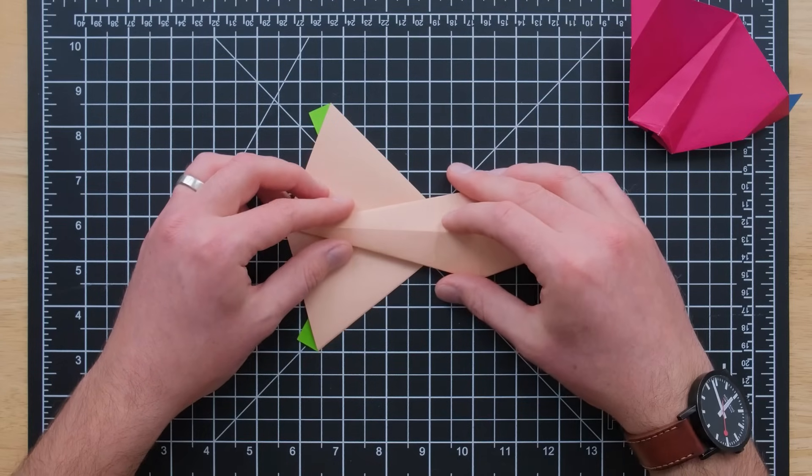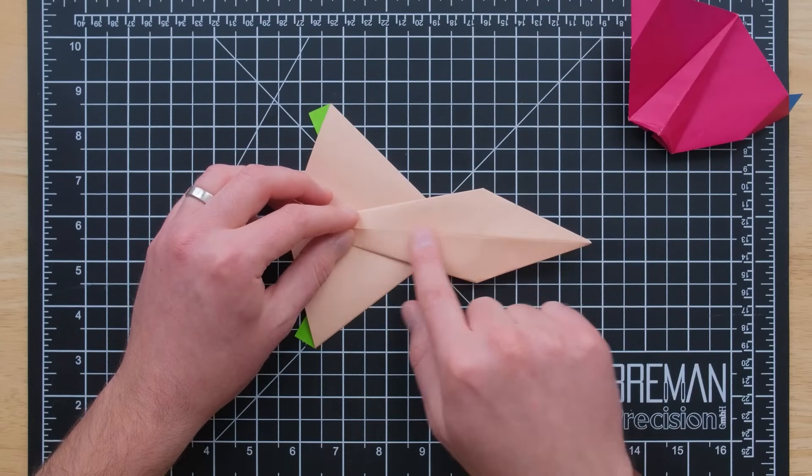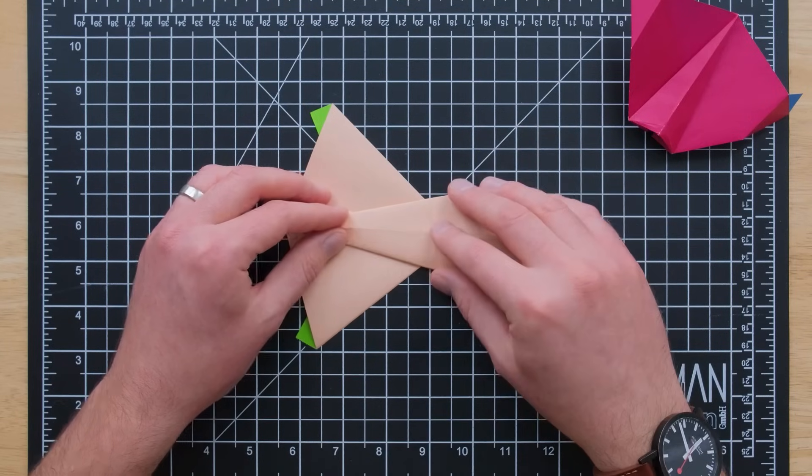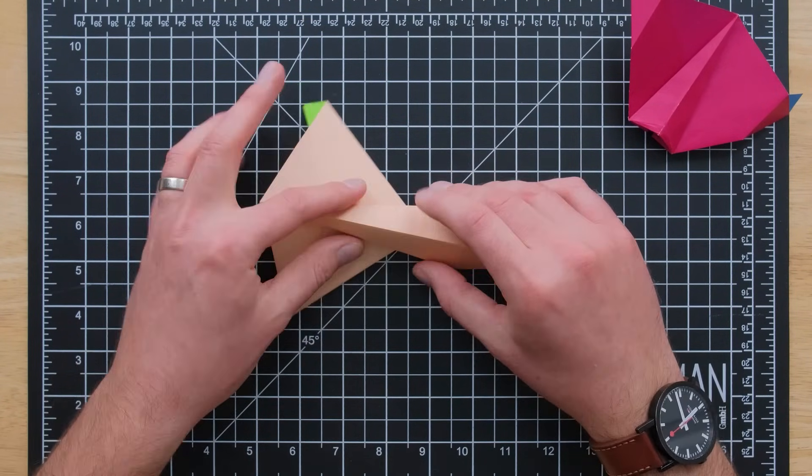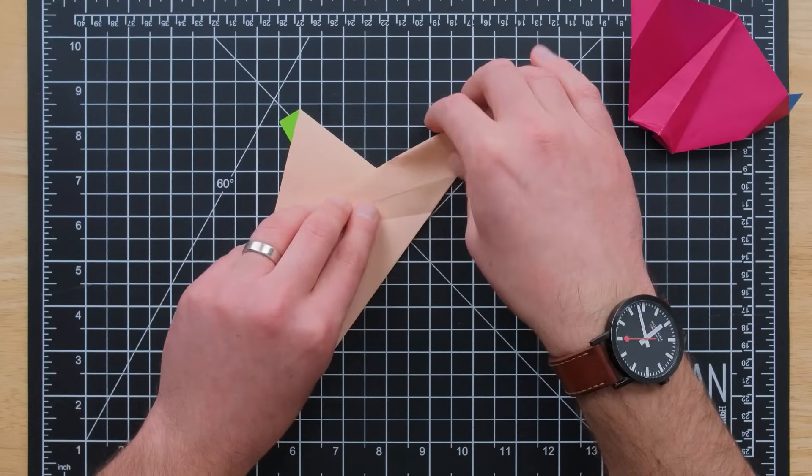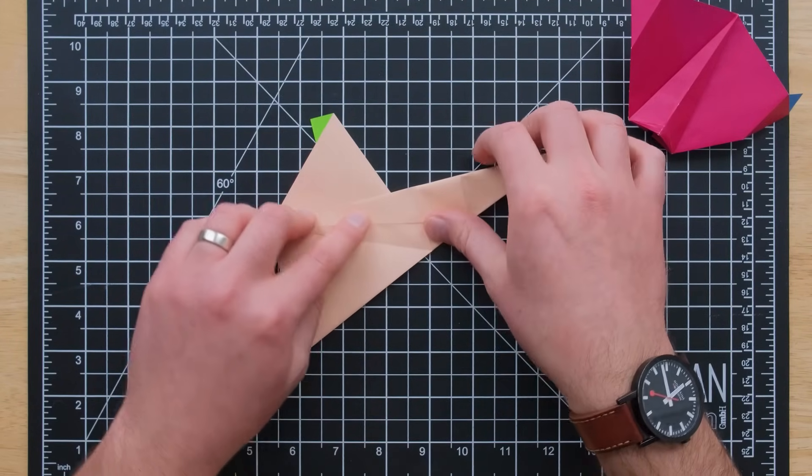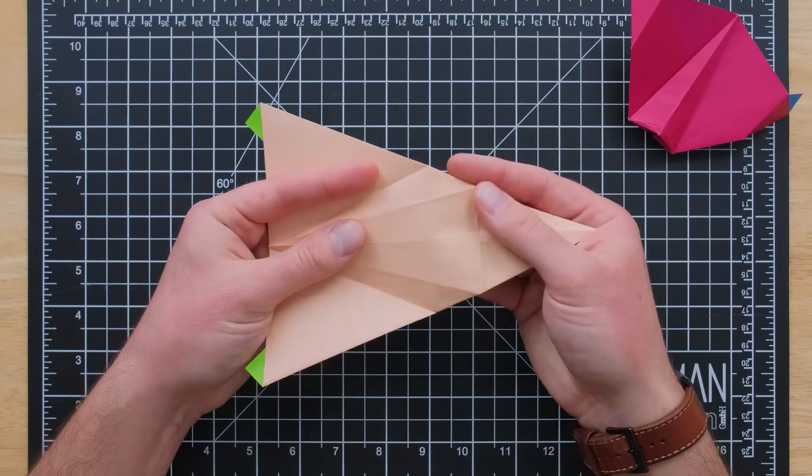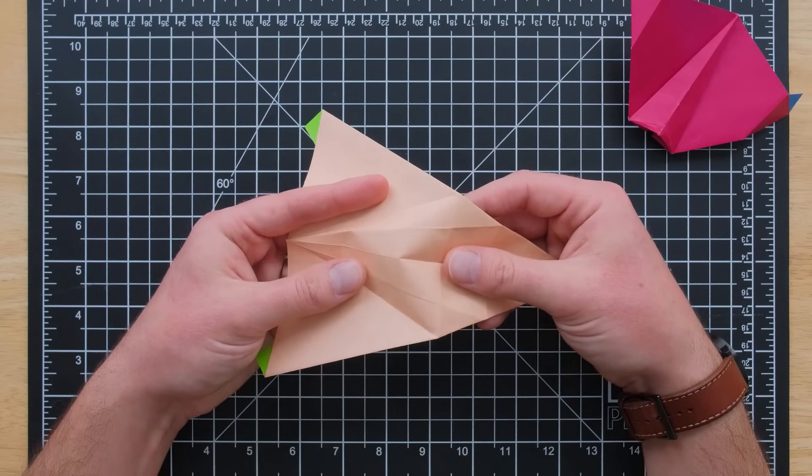All right. That is going to become the basis for the three-dimensional structure on the nose of our airplane. Now we're going to unfold that. Now that we've reinforced that line, that's all good.